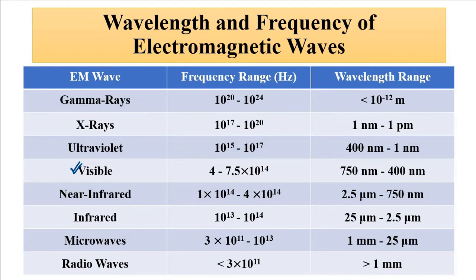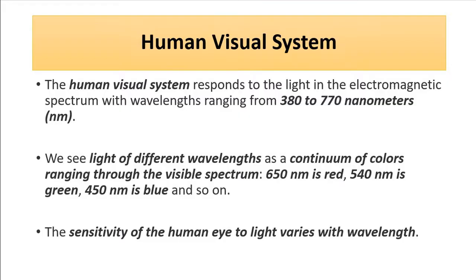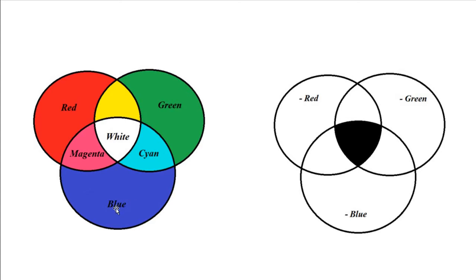Another important aspect in the study of light is the human visual system. The human eye is more sensitive to the visible range, which is from 380 to 770 nanometers or 400 to 750 nanometers. We are inherently biased when it comes to distinguishing different colors. Mainly we are more sensitive towards three colors — the three primary colors: red, green, and blue. The human eye is more sensitive towards these three colors.